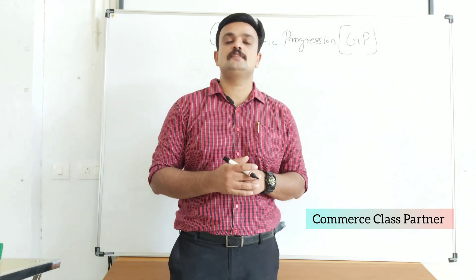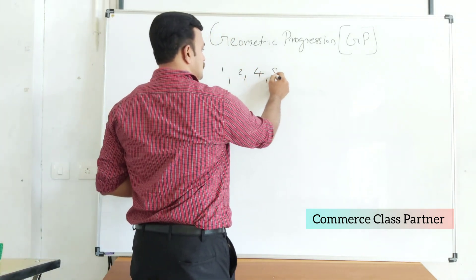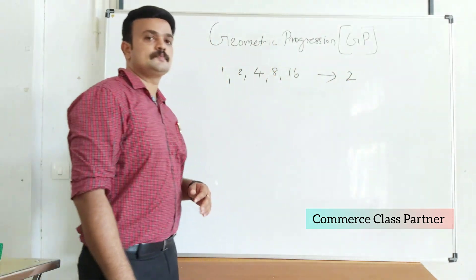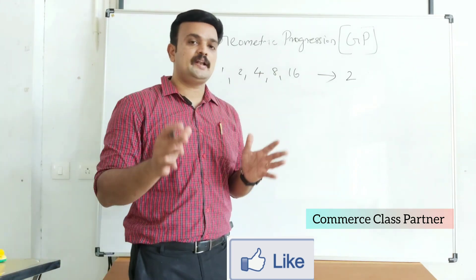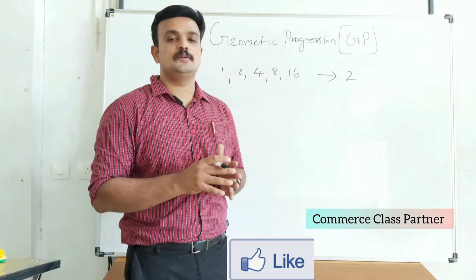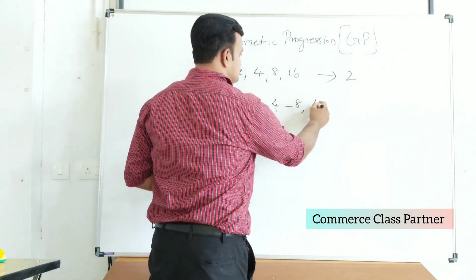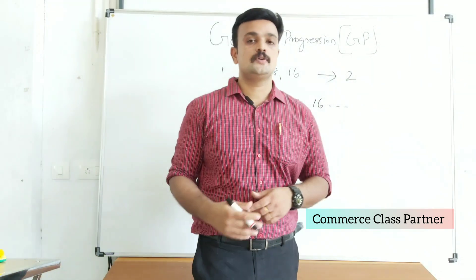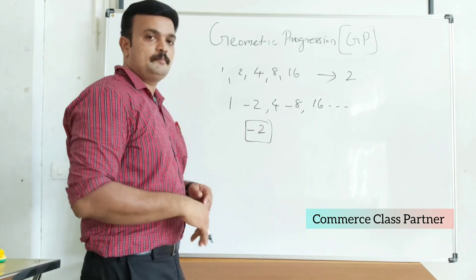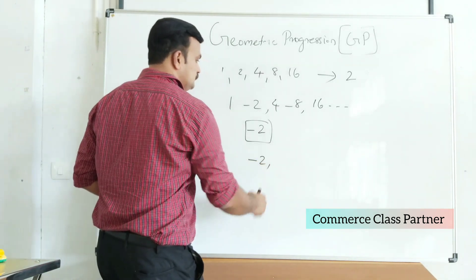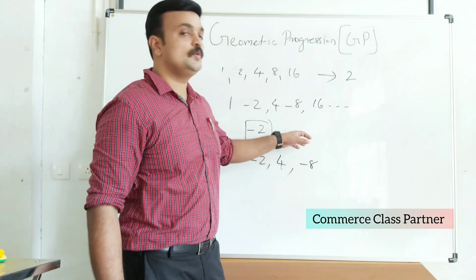If the common ratio is positive, then all terms will have the same sign — that is, positive. For example, 1, 2, 4, 8, 16 with common ratio 2: all terms are positive. However, if the common ratio is negative, the subsequent values will alternate between positive and negative. For example, 1, −2, 4, −8, 16 with common ratio −2: 1 × (−2) = −2, (−2) × (−2) = 4, 4 × (−2) = −8, (−8) × (−2) = 16.